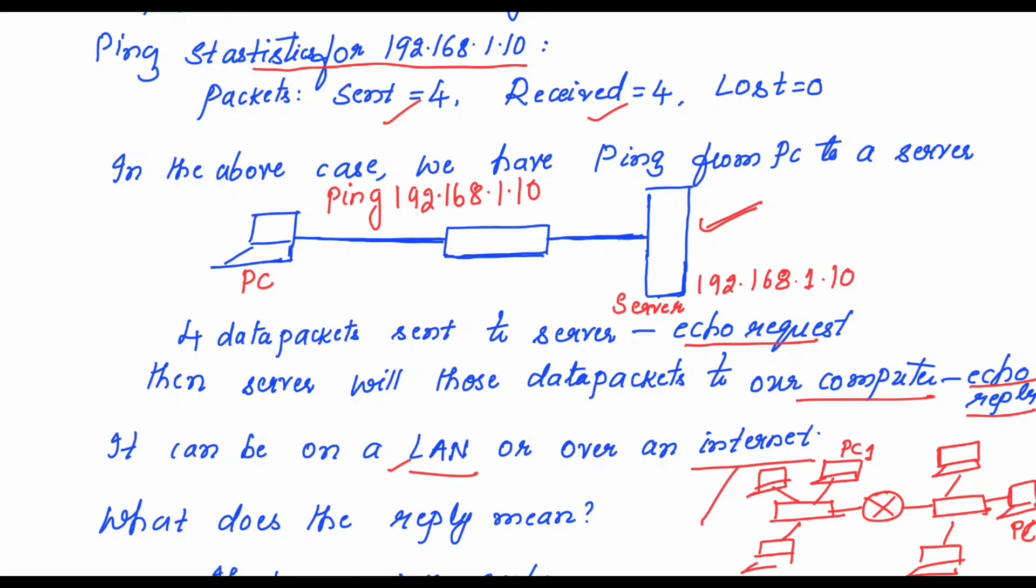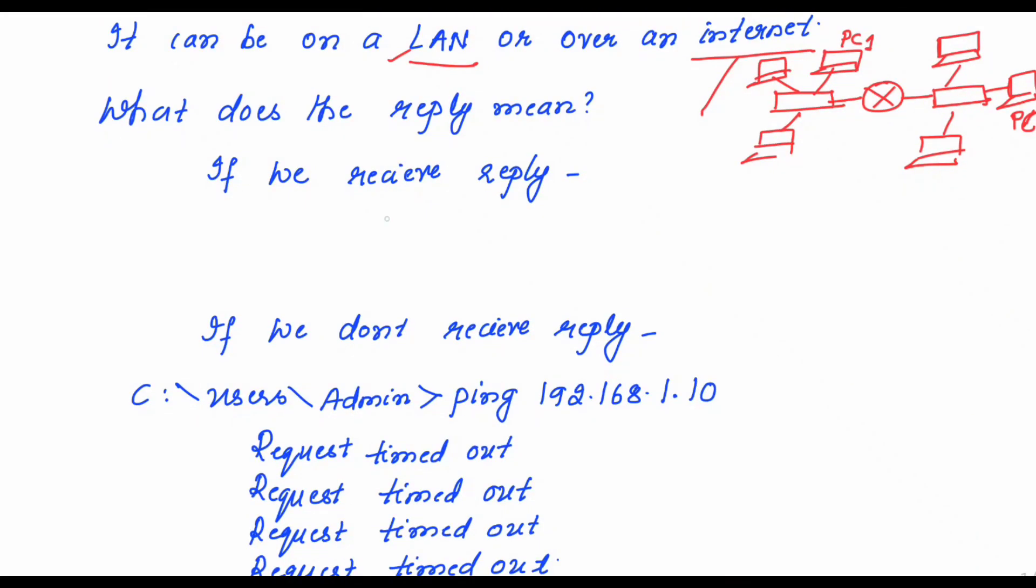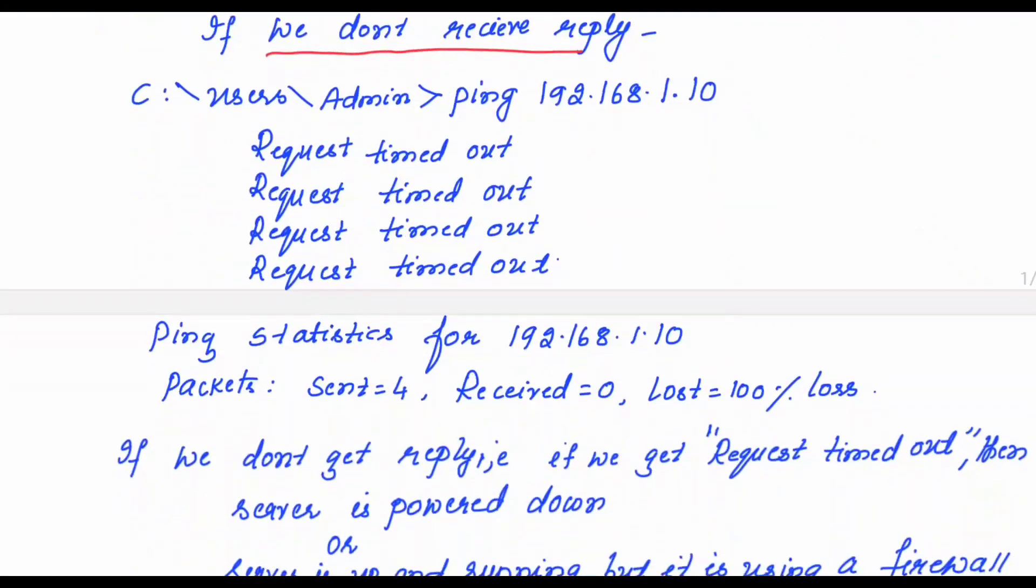Now let us see what does the reply. If we receive the reply, that means you are receiving the four packets. If we do not receive the reply, it will be like this: request timed out, request timed out, request timed out and request timed out. You can just check the difference between the earlier output and this output. Here what has happened is packets sent are four, received is equal to zero, 100% loss.